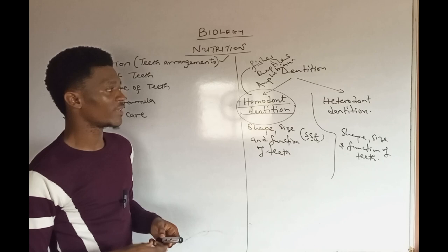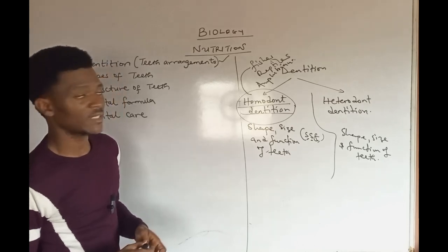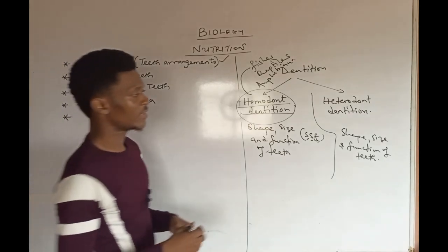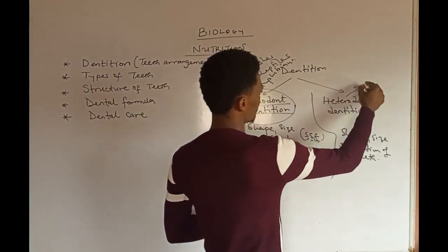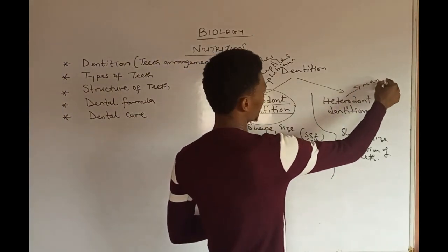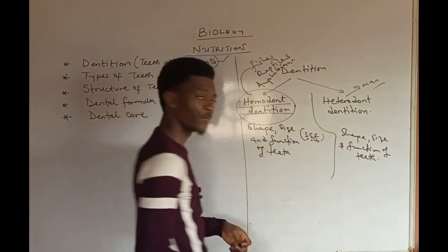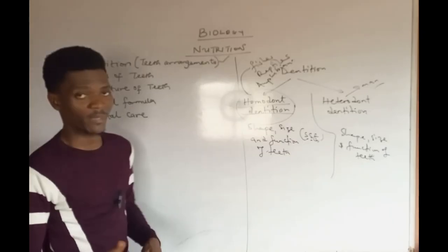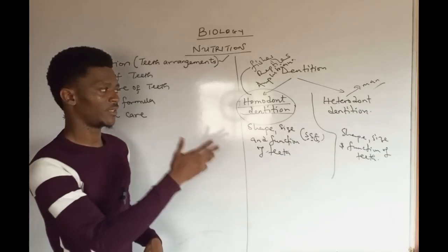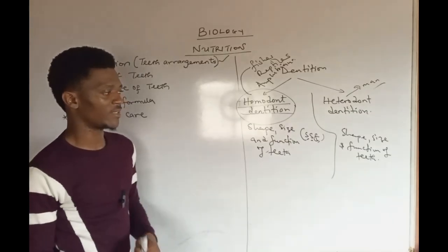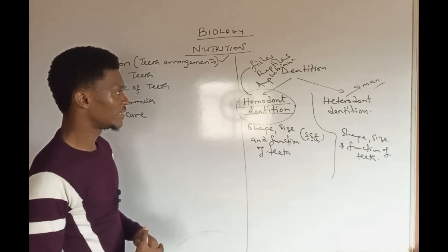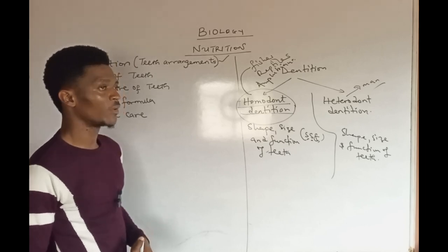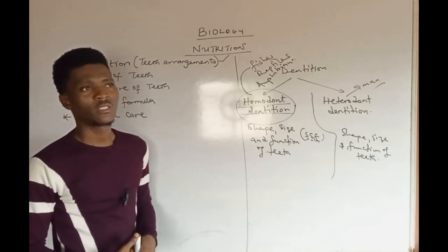While the vertebrate that possesses heterodont dentition is man, which is an example of a mammal, and other mammals as well — they possess heterodont dentition.